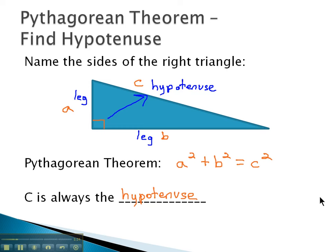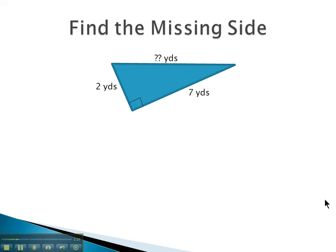We can use this relationship, a squared plus b squared equals c squared, in order to find a missing side of a triangle.